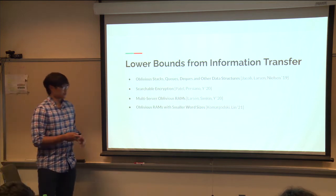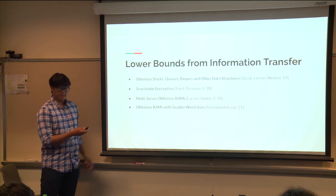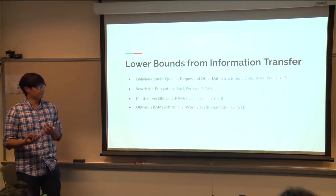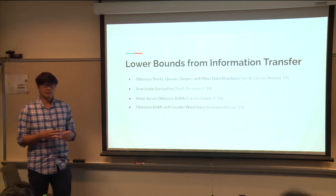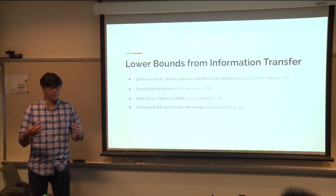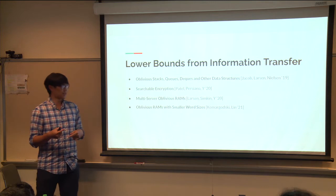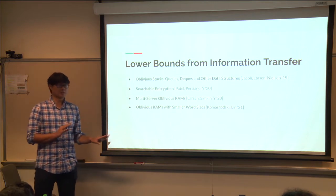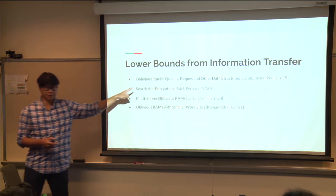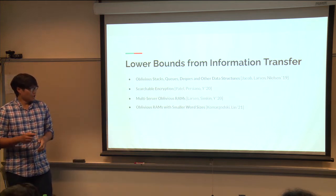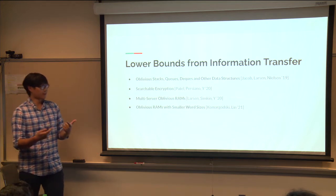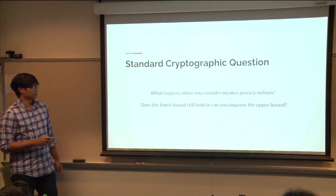Comparing information transfer to the chronogram: without privacy, I don't see a significant difference — both can prove dynamic lower bounds close to logarithmic, and information transfer is typically easier to reason with. But you can't use information transfer to get log-squared lower bounds. The real difference emerges when considering weaker privacy notions.